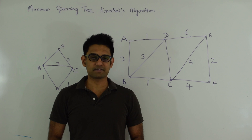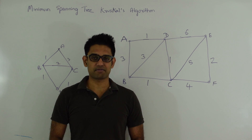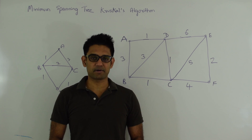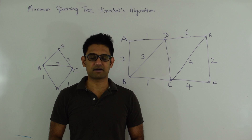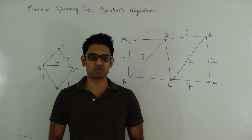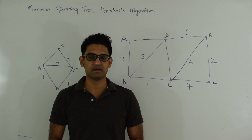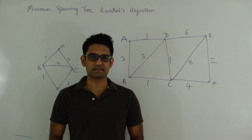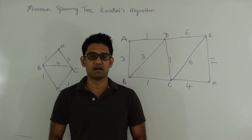So what is a spanning tree? A spanning tree of an undirected graph is a subgraph such that all the vertices are connected to each other and there are n-1 edges in the subgraph where n is the total number of vertices. So basically the subgraph represents a tree.